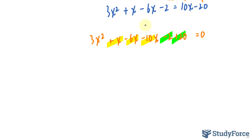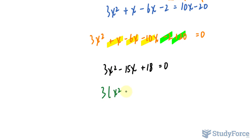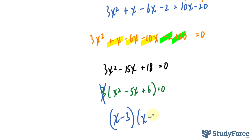Combining like terms: 1 minus 6 is negative 5, and negative 5 minus 10 is negative 15. So I get 3x squared minus 15x plus 18 equals 0. I can common factor a 3 from all terms, giving x squared minus 5x plus 6 equals 0. Dividing both sides by 3 removes the leading coefficient, and the quadratic factors as (x minus 3)(x minus 2) equals 0. Therefore, x equals 3 and x equals 2.